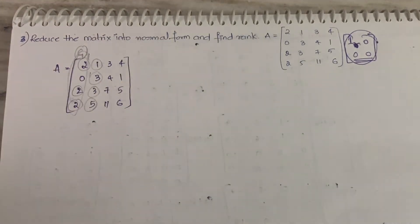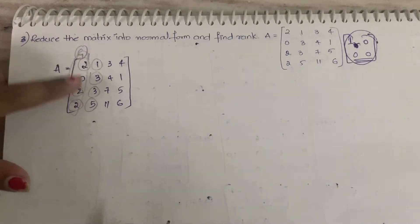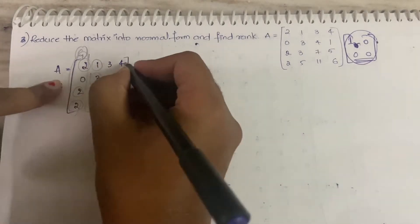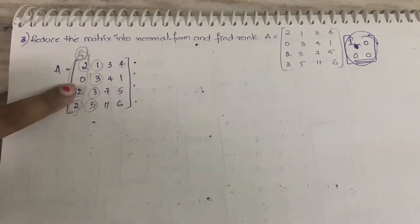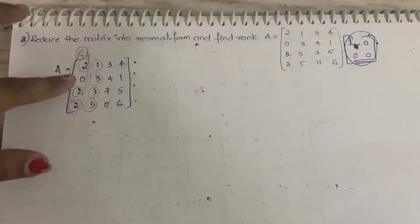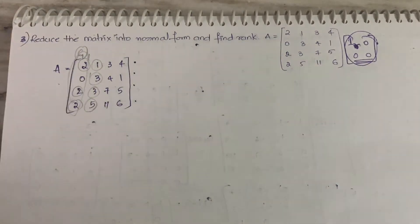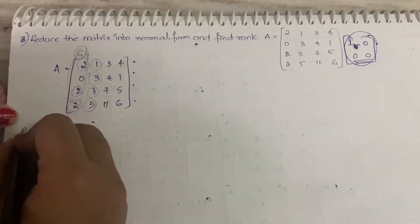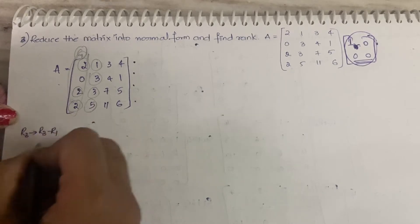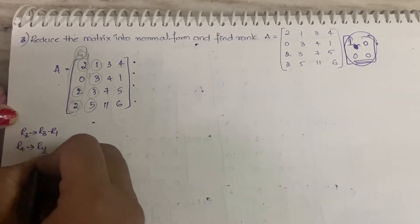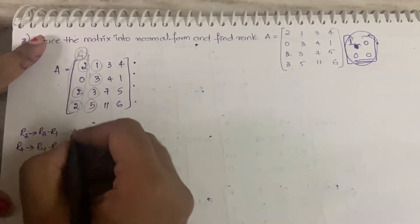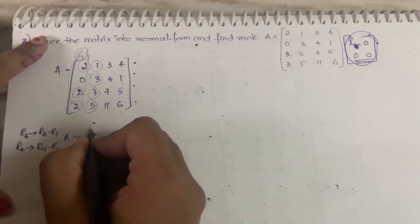In the first column, we have 2, 0, 2, 2. It is very simple — if you do R3 minus R1 and R4 minus R1, you will directly get zeros there. So our first operations are: R3 becomes R3 minus R1, and R4 becomes R4 minus R1. R1 and R2 will remain the same.